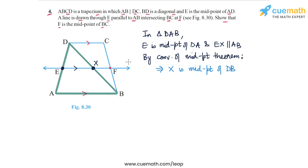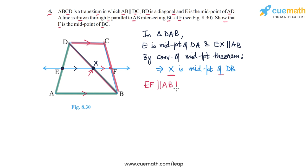Now think about triangle DBC. In this triangle we will again apply the converse of the midpoint theorem, because X is the midpoint of DB — which we proved in the first step — and XF is parallel to DC. This is because EF was drawn parallel to AB, and AB is also parallel to DC, so EF is parallel to both AB and DC.